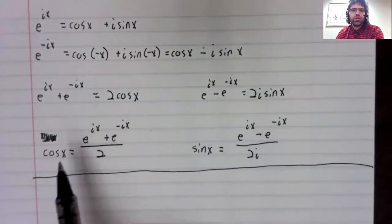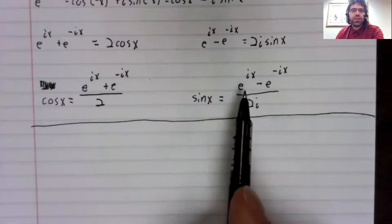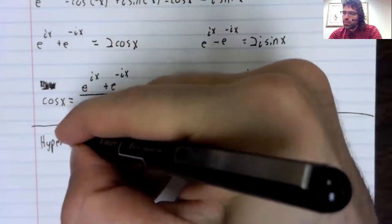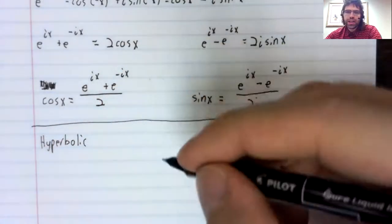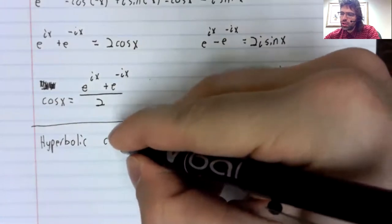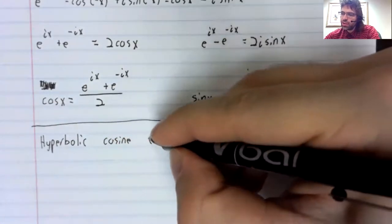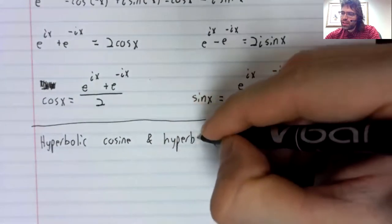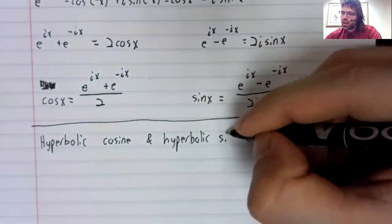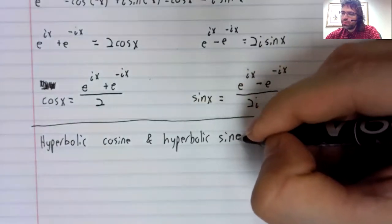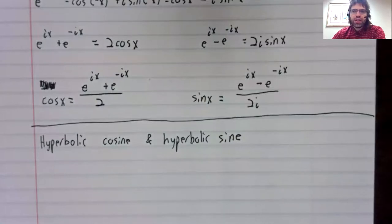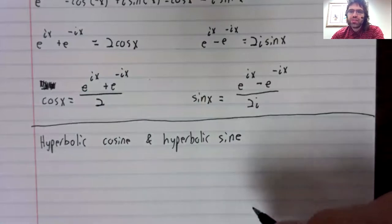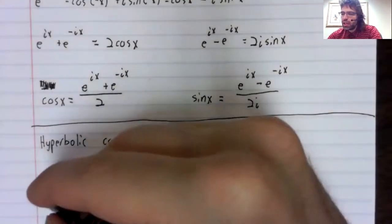Now that you've seen this, when you see the hyperbolic cosine and the hyperbolic sine, hopefully the definition you're about to see will be a lot less arbitrary seeming.